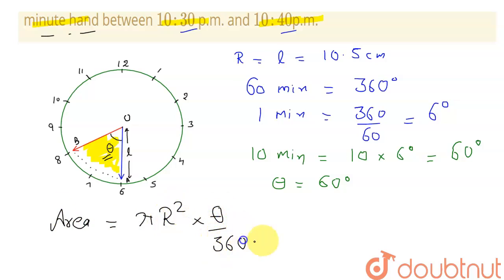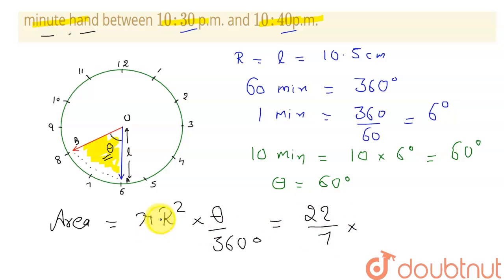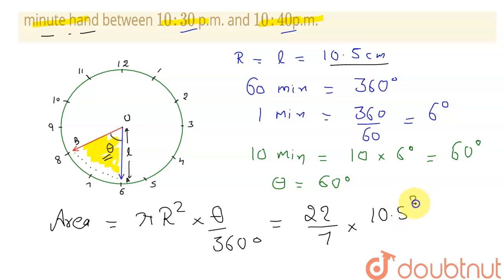The value of pi is 22 divided by 7. The radius is the length of the minute hand, which is 10.5 centimeters, so I write 10.5 squared. Theta is 60 degrees.